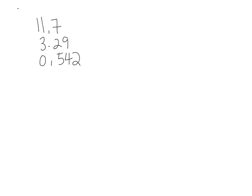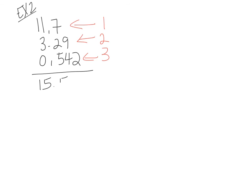Example 2: 11.7 + 3.29 + 0.542. The first number has 1 decimal place, the second has 2, and the third has 3. Adding gives 15.532, but that's more accurate than our least accurate number. We can only have 1 decimal place — looking at the number to be dropped, it's a 3, so we leave our number alone. The final answer is 15.5.